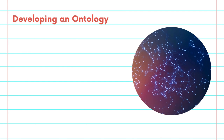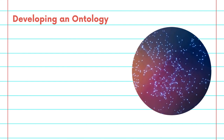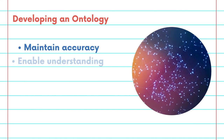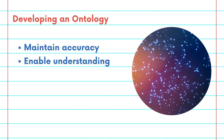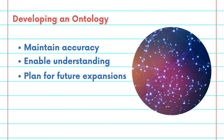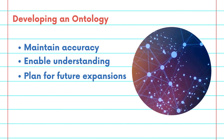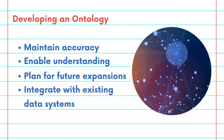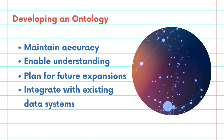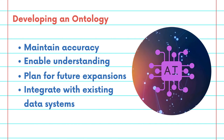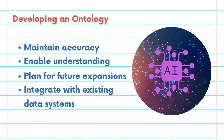Developing an ontology requires a thoughtful approach to explore what is needed to maintain accuracy, enable understanding of a domain, plan for adaptability to accommodate future expansions, and integrate with existing data systems. We'll also look at how emerging technologies like artificial intelligence and machine learning are revolutionizing ontology development, making them more dynamic and intuitive.